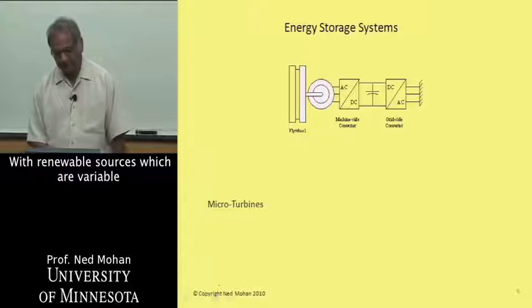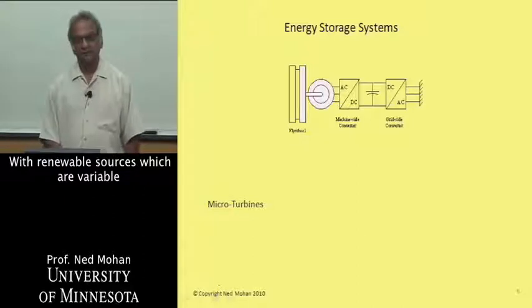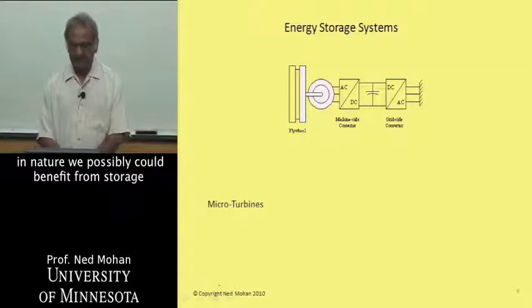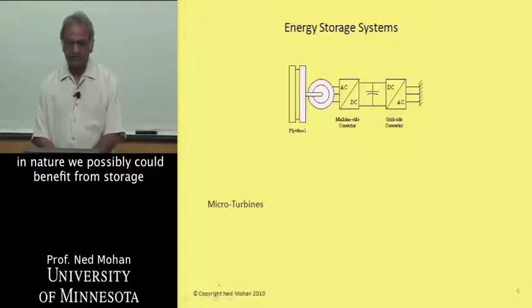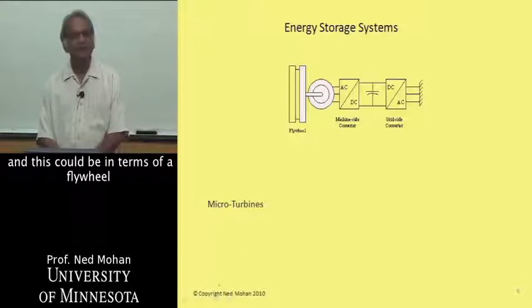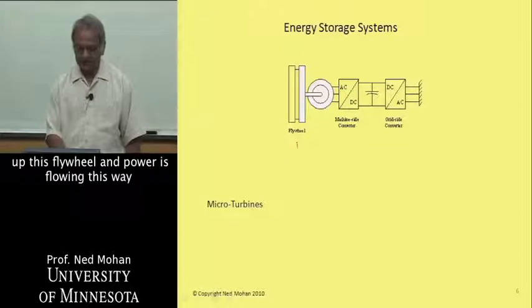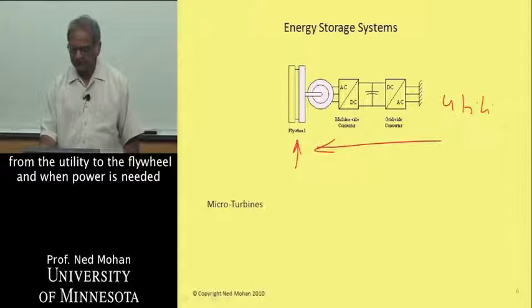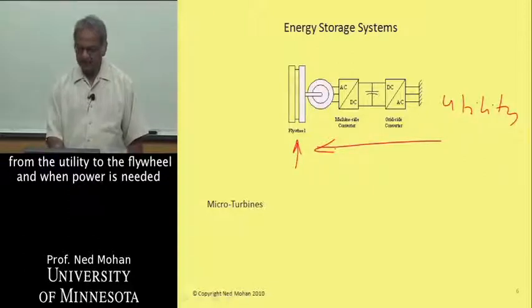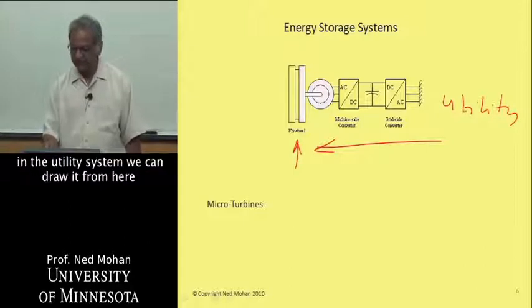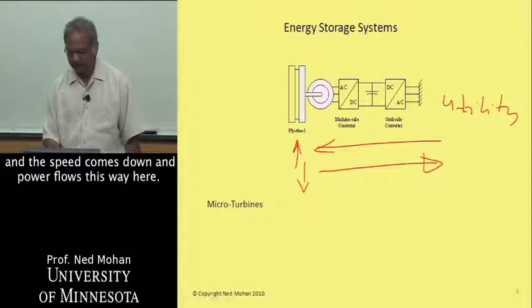With renewable sources, which are variable in nature, we can benefit from storage such as flywheels. When there's excess power available, we can speed up the flywheel, with power flowing from the utility to the flywheel. When power is needed in the utility system, we can draw it from the flywheel, the speed comes down, and power flows back to the grid.